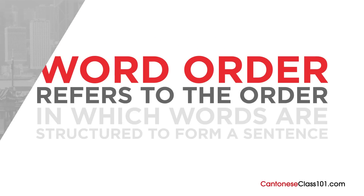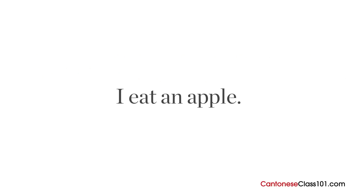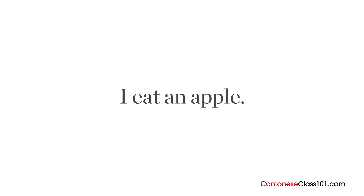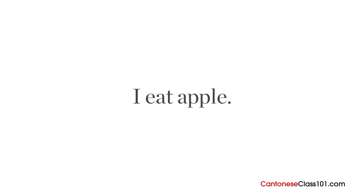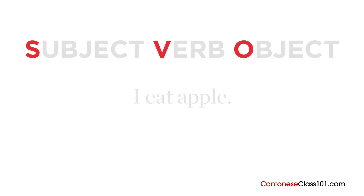Word order refers to the order in which words are structured to form a sentence. Consider the English sentence: I eat an apple. Let's remove the article for simplicity, so we're left with just: I eat apple. The basic word order for English is subject-verb-object, or SVO for short.